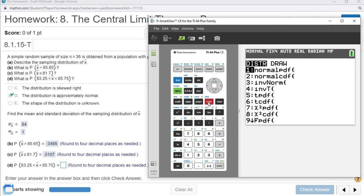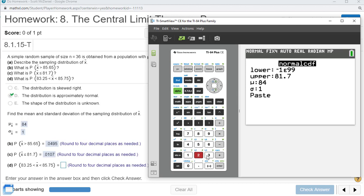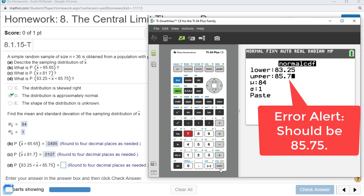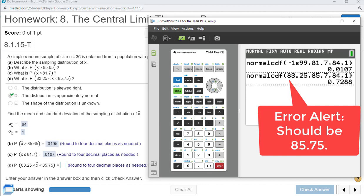Second distribution, number two. Our lower bound now is 83.25. Upper bound, 85.75. We keep the same mean and standard deviation. Press enter, and we get about 0.7288.